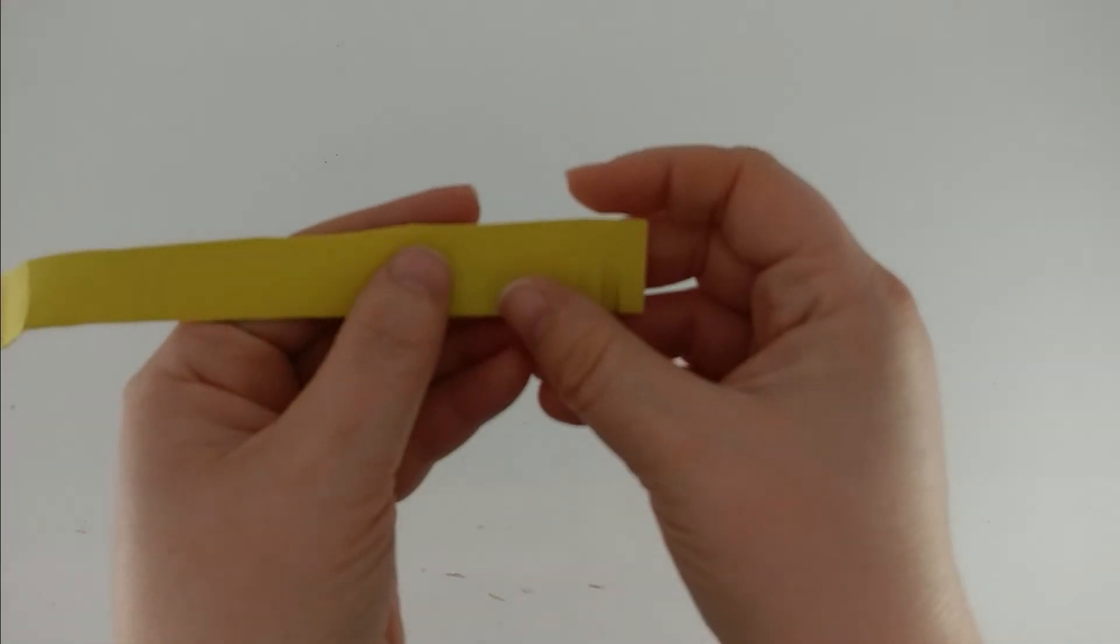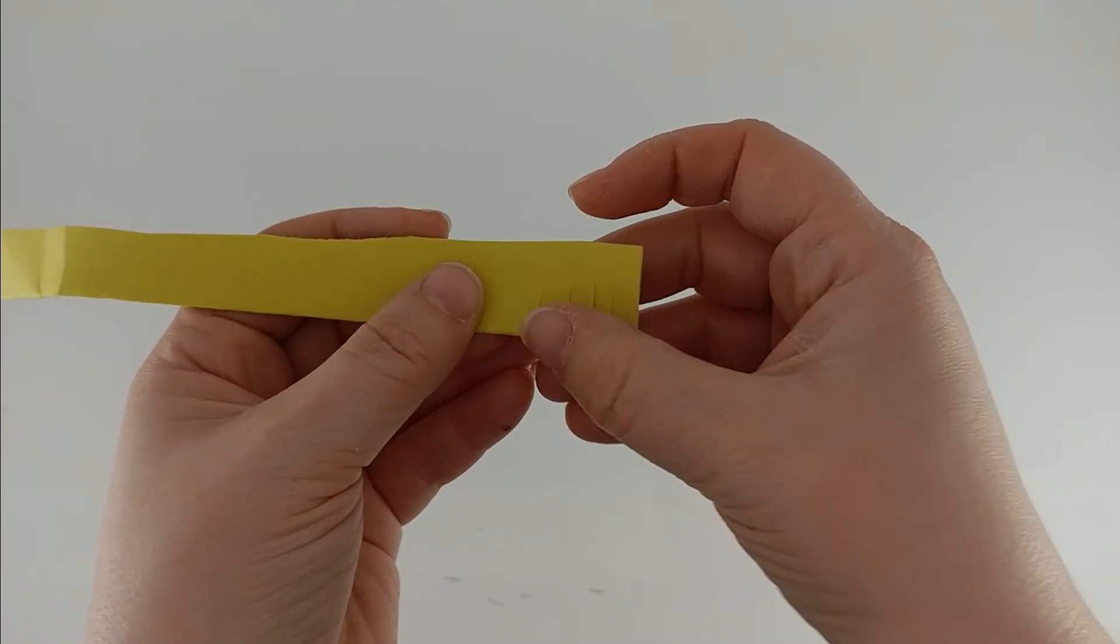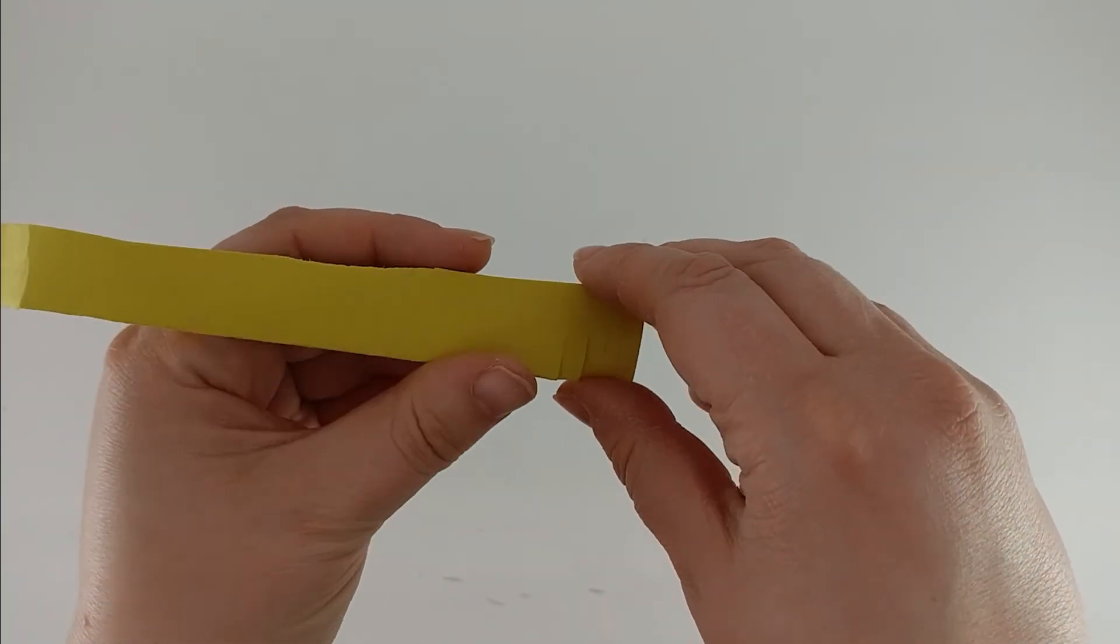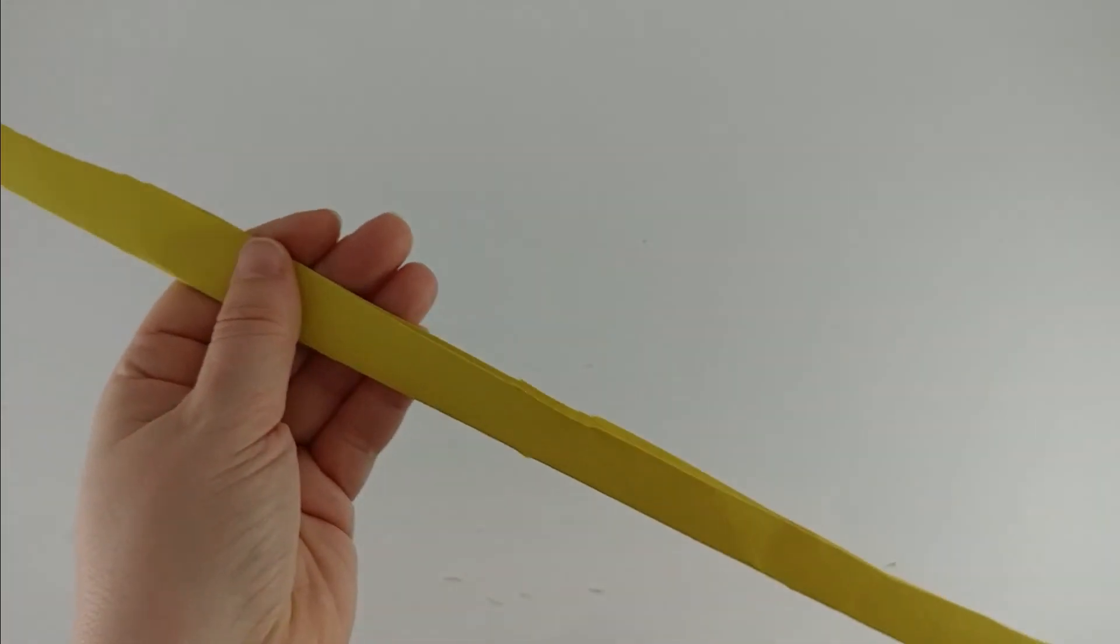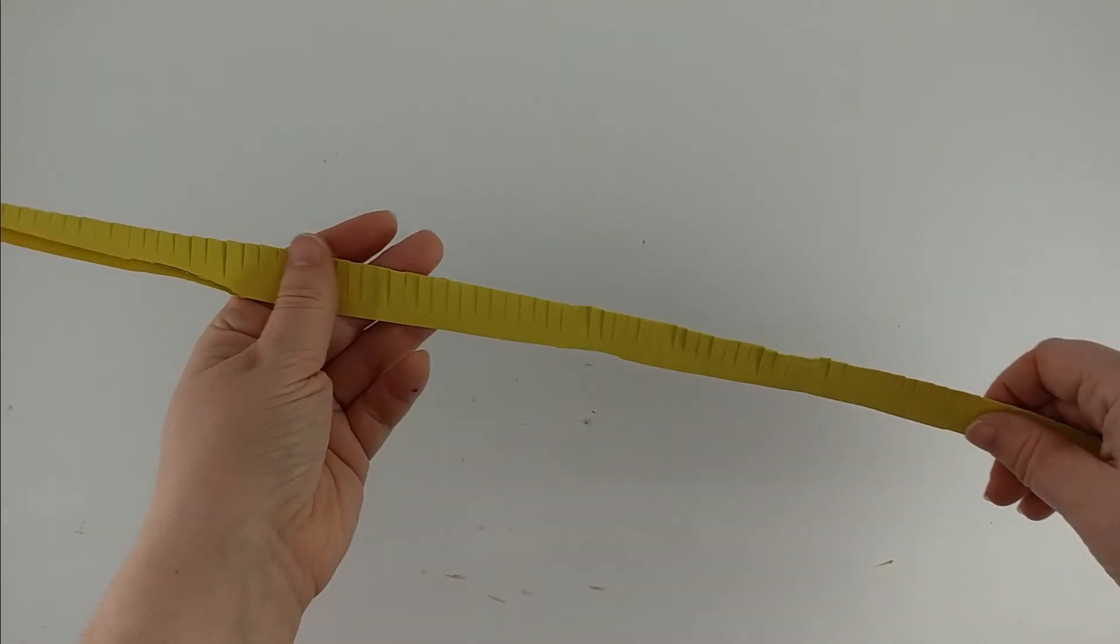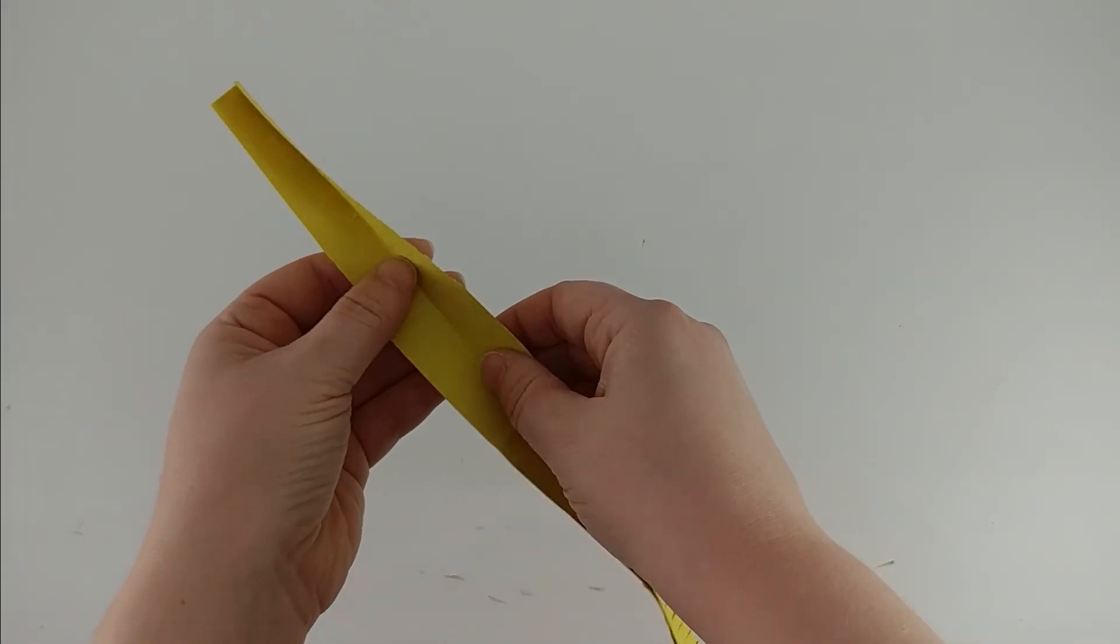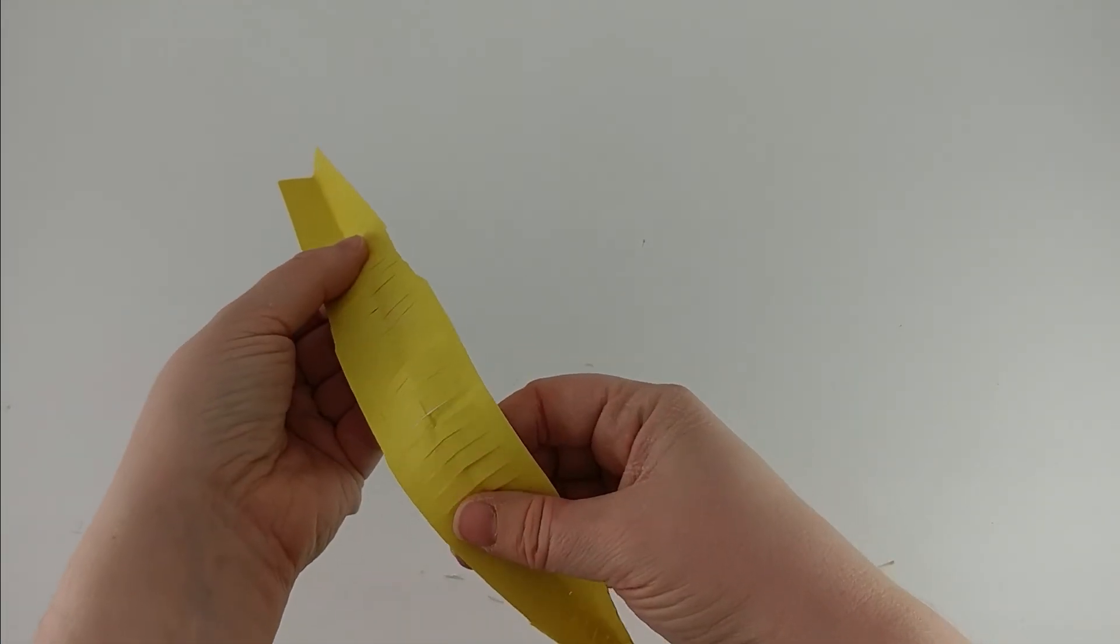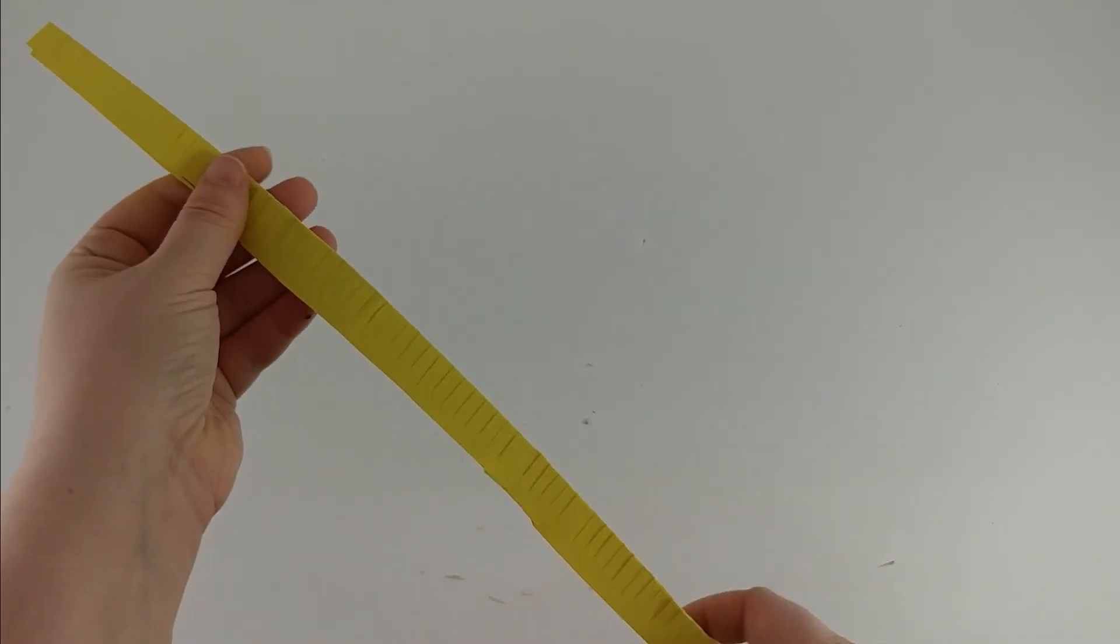You can see that I have little slits but it doesn't go all the way through. Everything is still connected. I'm going to do that for this entire length. Now that I have my entire piece cut, I cut on the folded edge but not all the way through. Leave it folded.